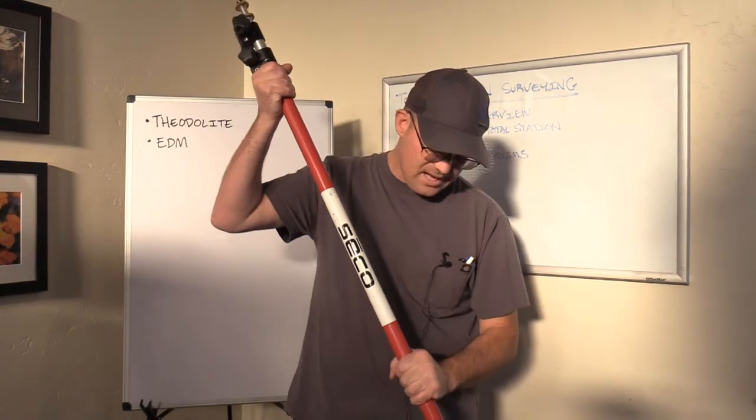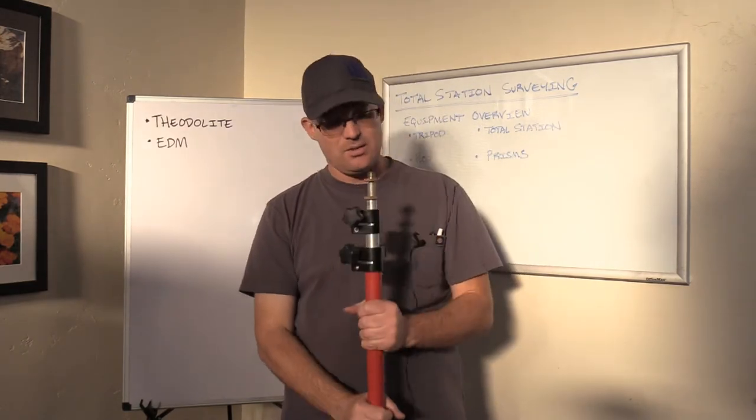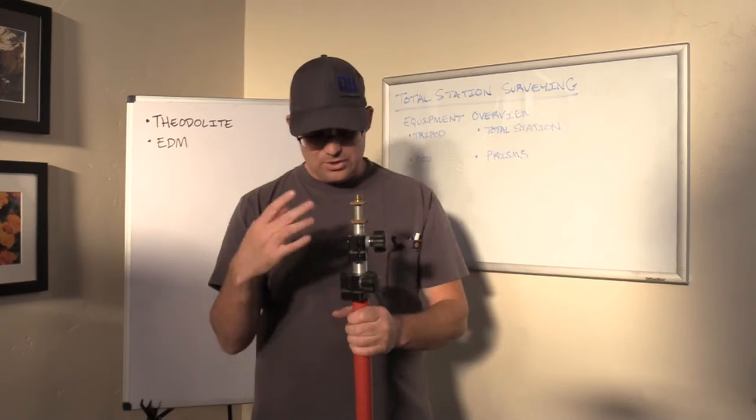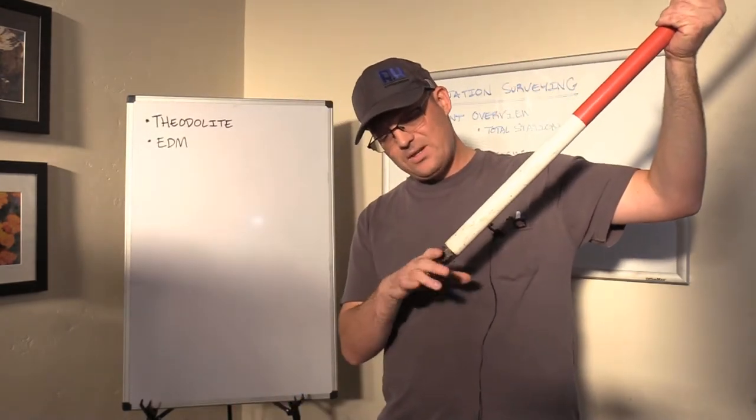So this is a typical survey rod manufactured by Seiko. These guys make good gear. I want to just talk about the different parts of the rod. At the bottom of the rod, you've got a tip. This is a pointed tip.